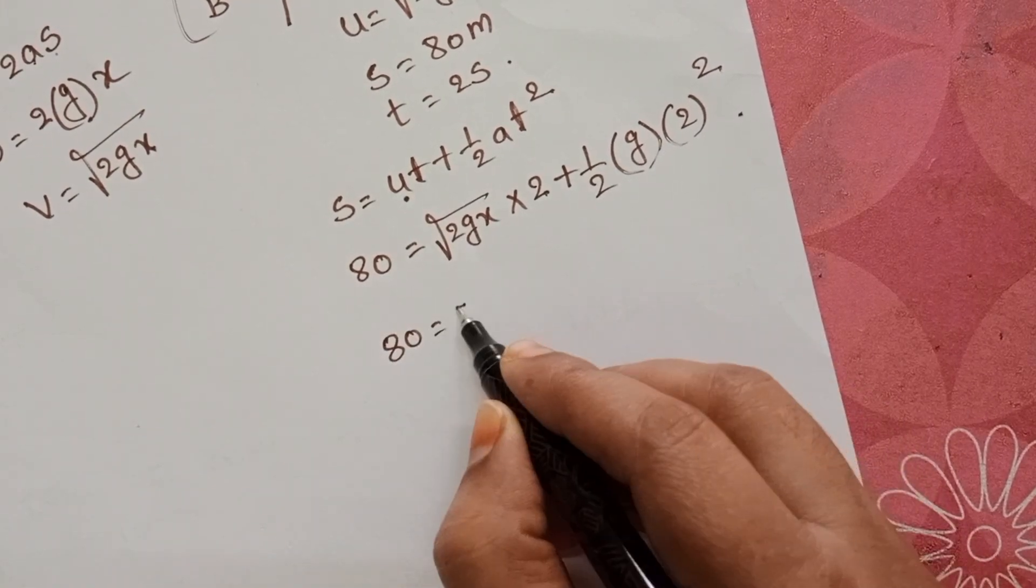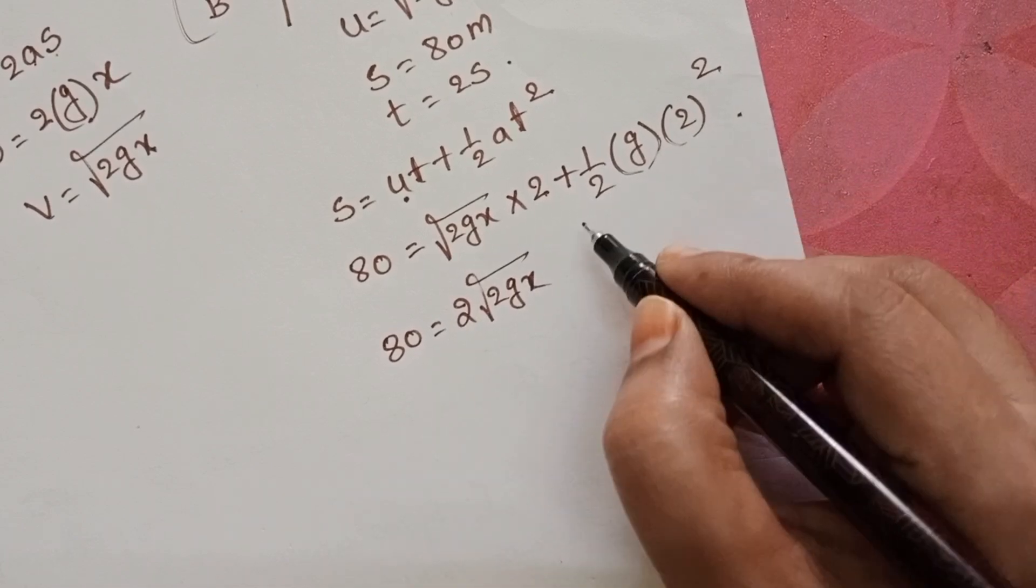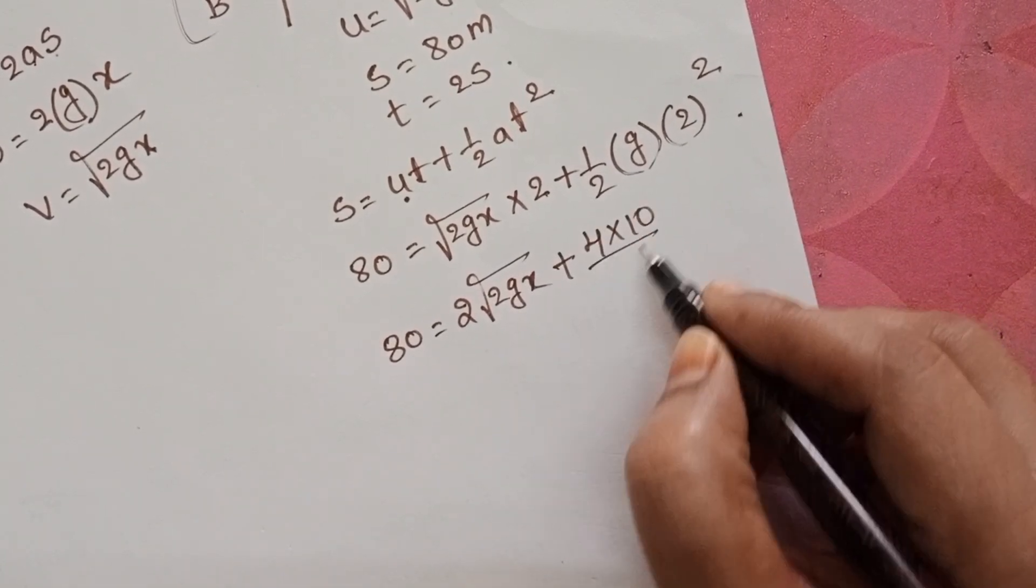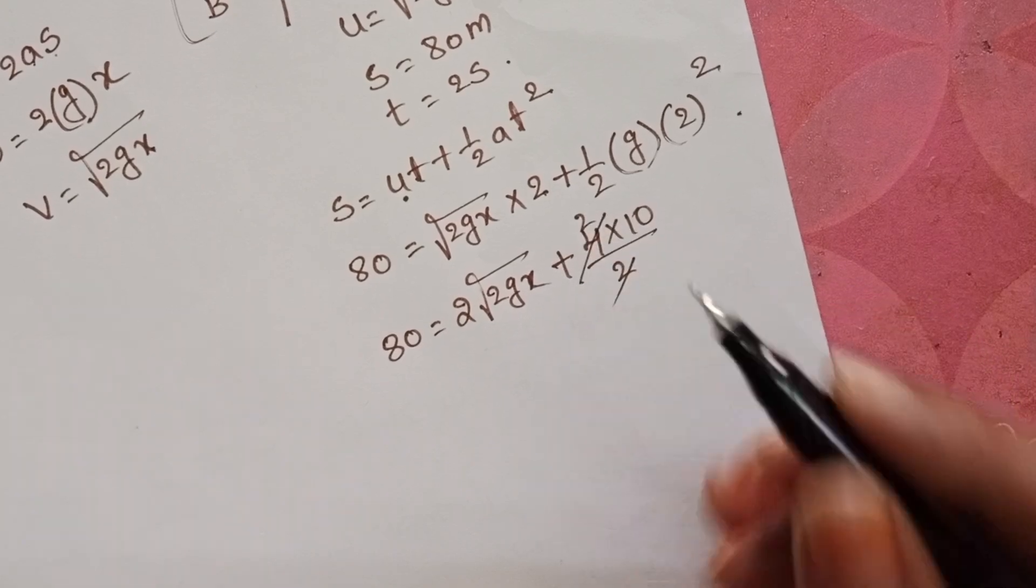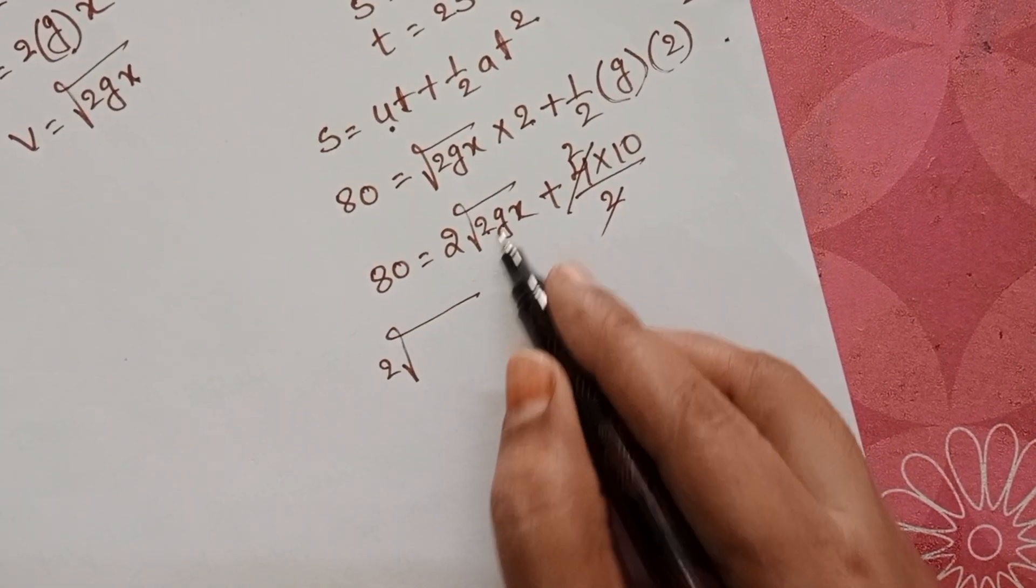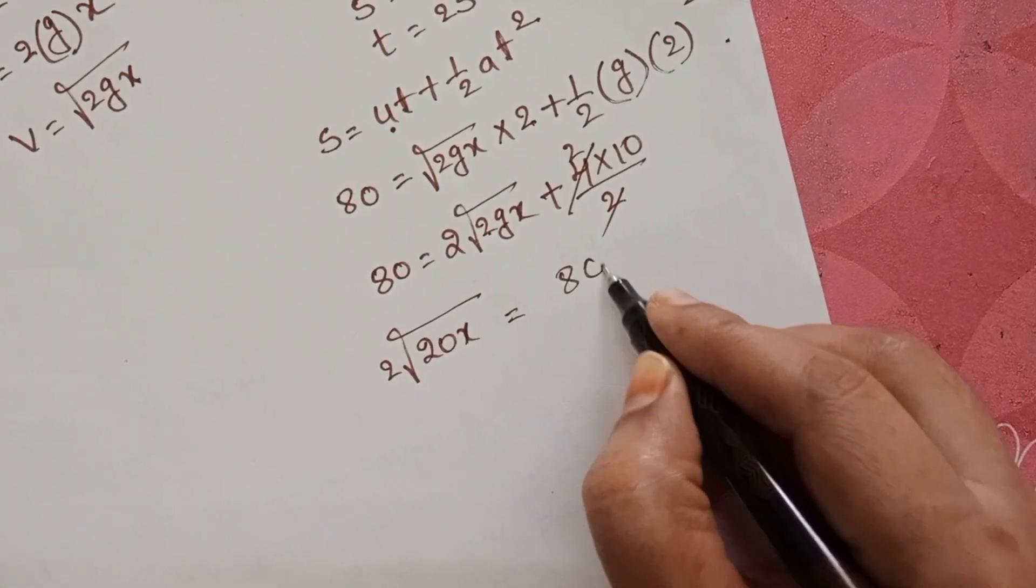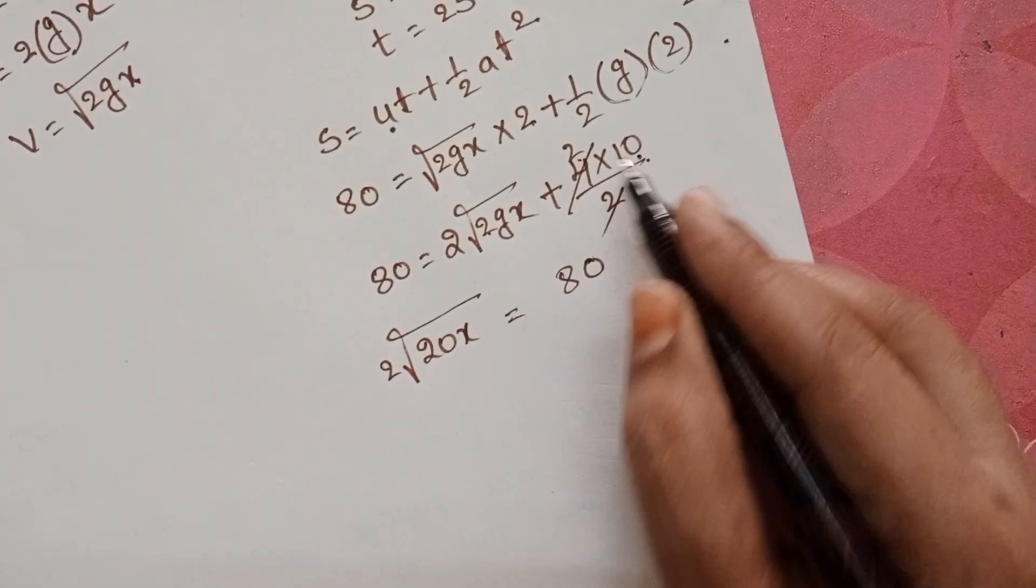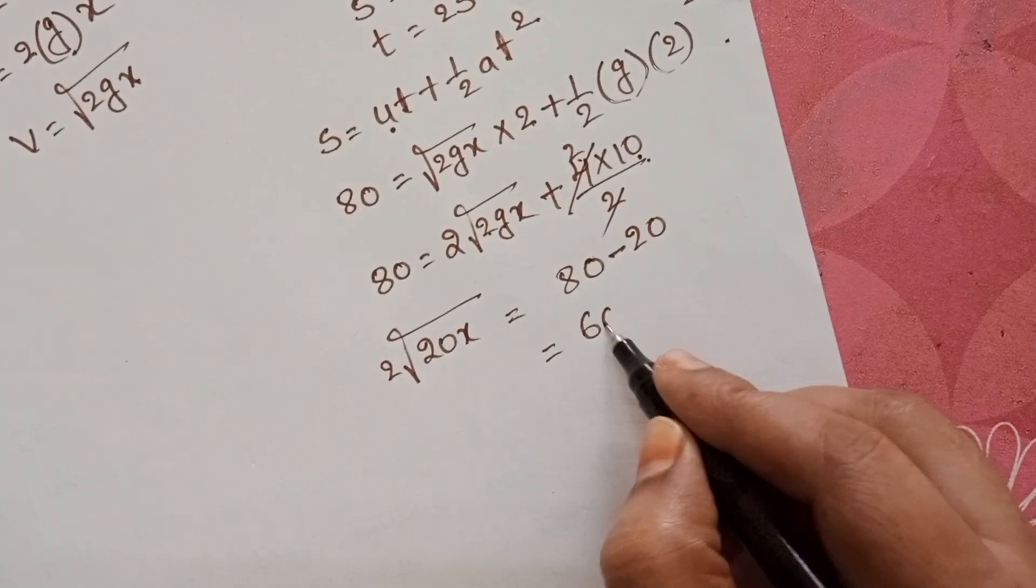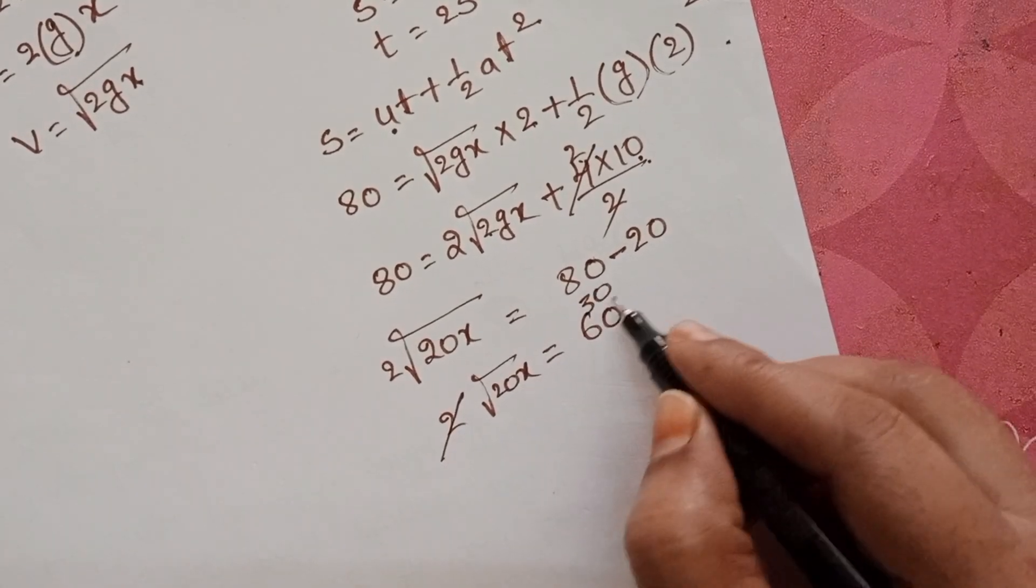80 equals 2 into square root of 2GX plus 4 into 10 by 2. 2 into square root of 2 into 10, 20X equals 80. This plus 20 goes to that side minus 20. 80 minus 20 equals 60.